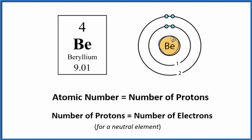The protons are in the nucleus, and the electrons are spread out in these energy levels. We have two energy levels for the beryllium atom.